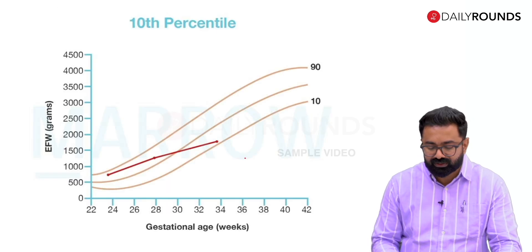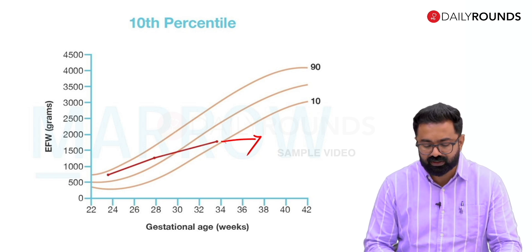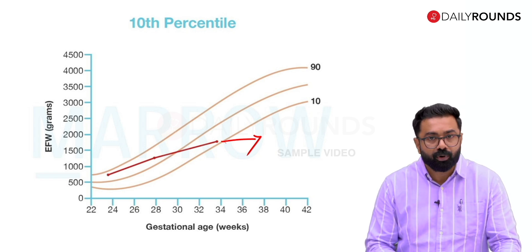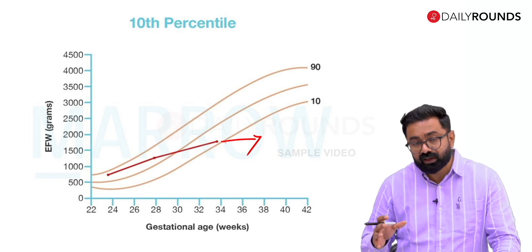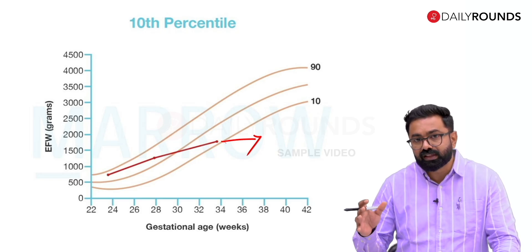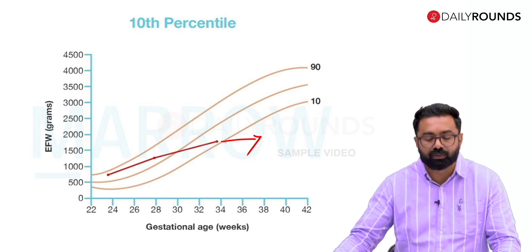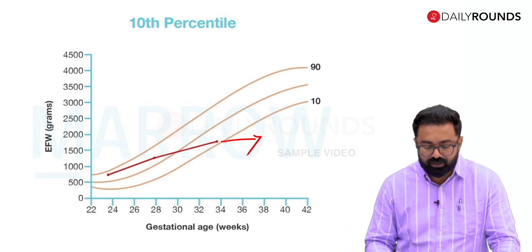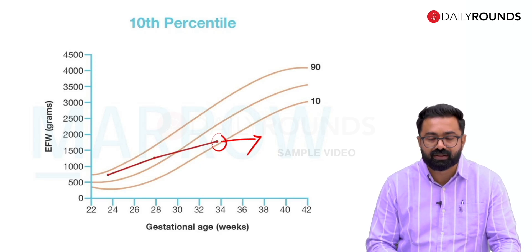If you extrapolate this growth chart, it will effectively end up being less than the 10th centile sooner rather than later. The growth chart becomes a very important tool in diagnosing FGR in AGA babies because it reveals the falling growth pattern. Without plotting a growth chart, you would still say the baby is normal because it is weighing above the 10th centile.